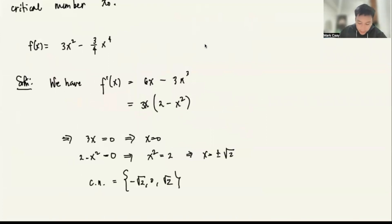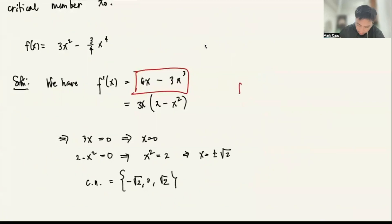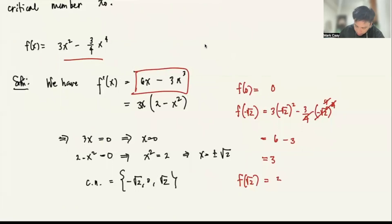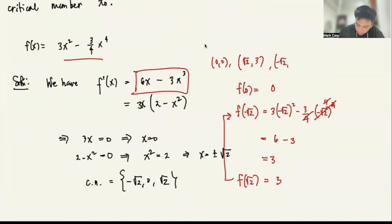Now we find the corresponding critical points. f(0) = 0. For f(−√2): this is 3(−√2)² − (3/4)(−√2)⁴ = 3(2) − (3/4)(4) = 6 − 3 = 3. Similarly f(√2) = 3. So the critical points are (0, 0), (√2, 3), and (−√2, 3).